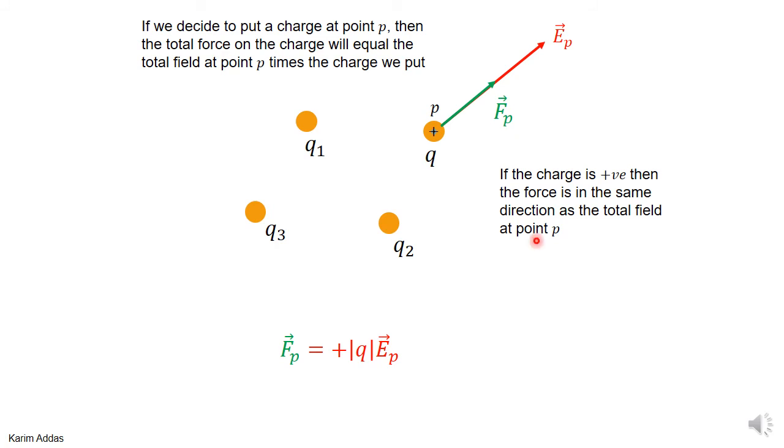If we decide to put a charge q at point P, then we can find the force on that charge q. The force will be given as the charge times the electric field. In this case it's a positive charge, so we write it as positive magnitude of q times E. Then the force will be in the same direction as the field.